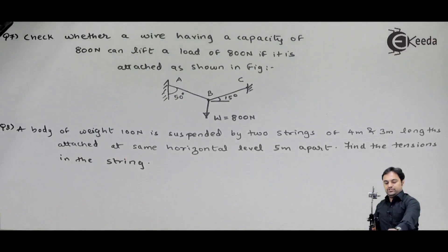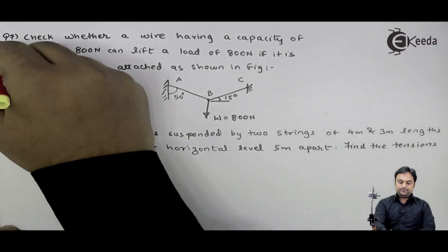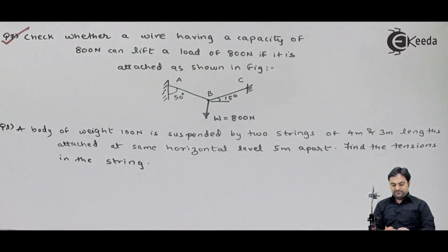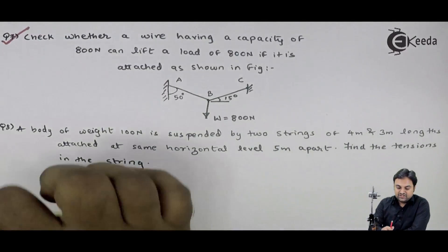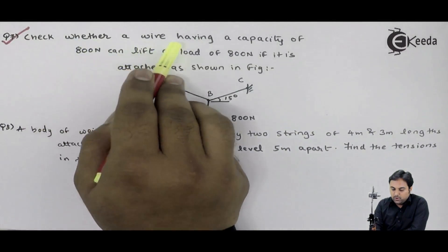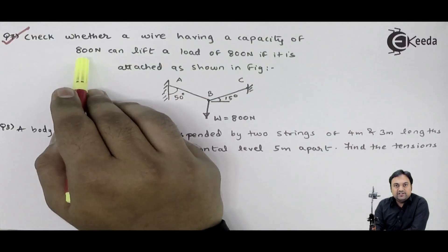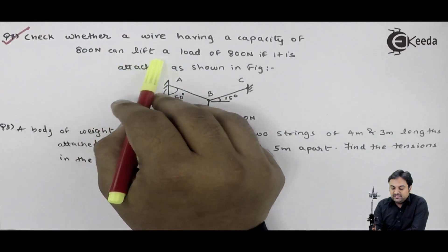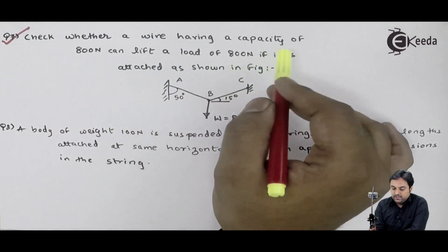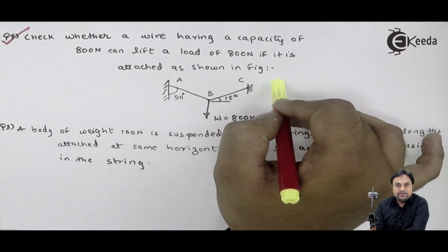Now, let us take question number 7. In question number 7, it is given that check whether a wire having a capacity of 800 Newton can lift a load of 800 Newton if it is attached as shown in figure.